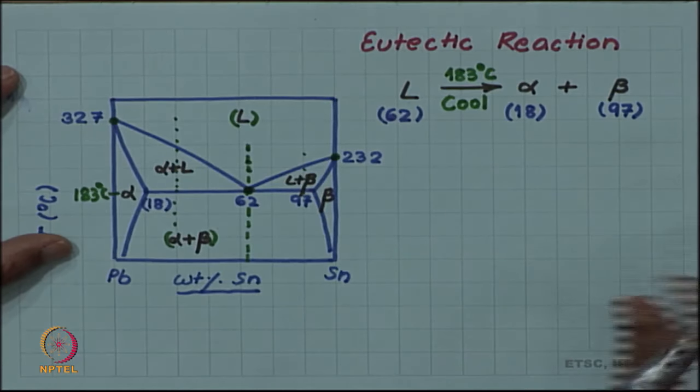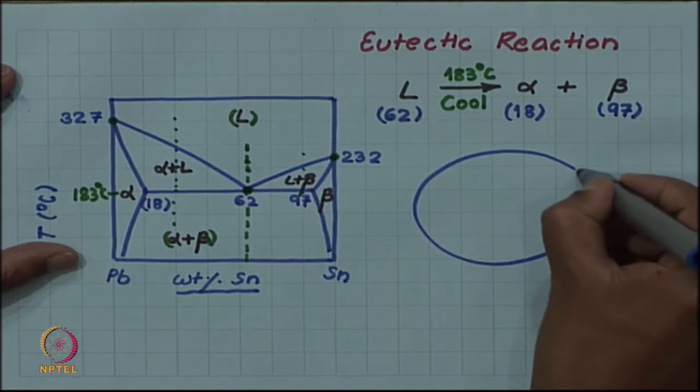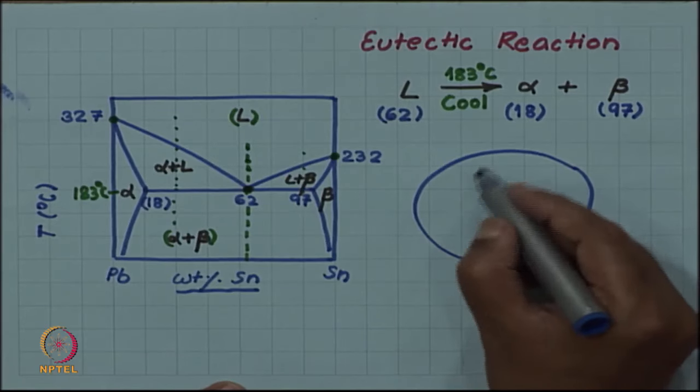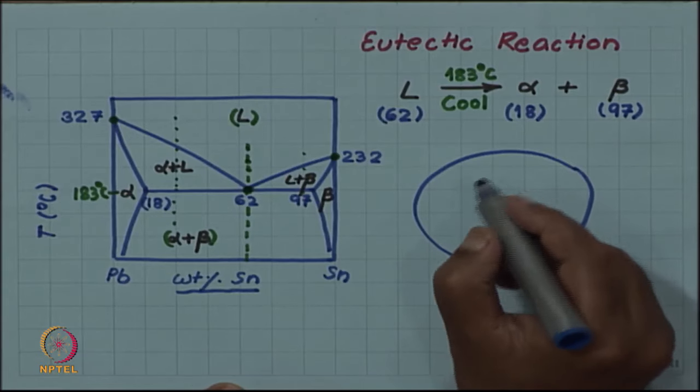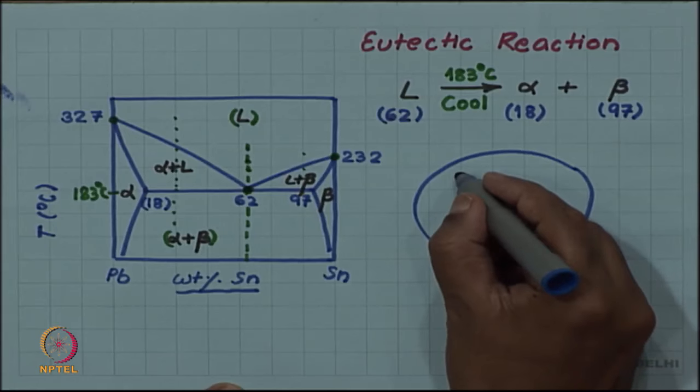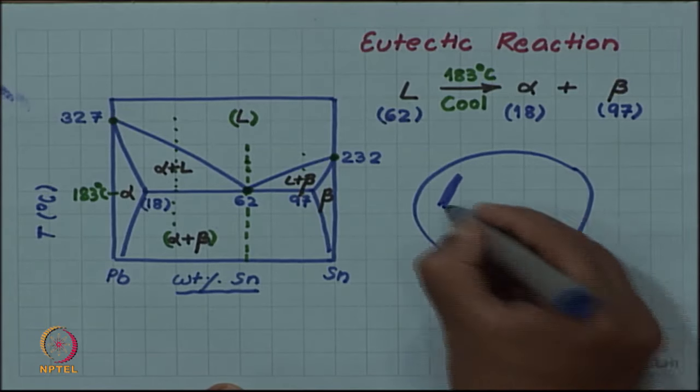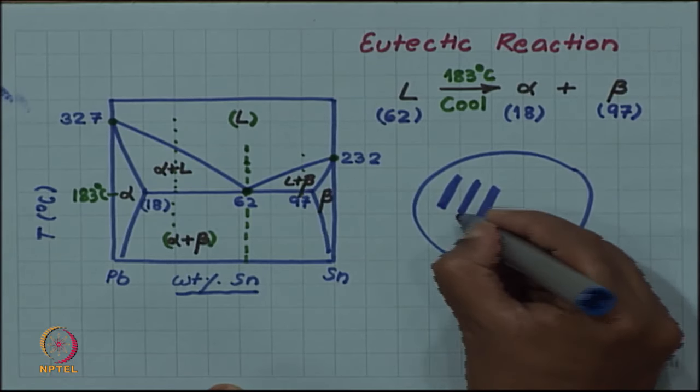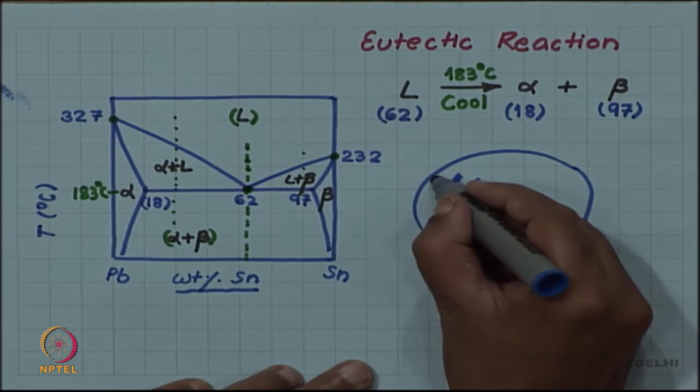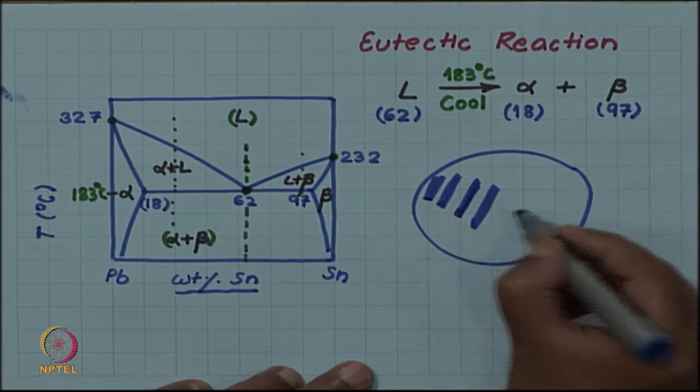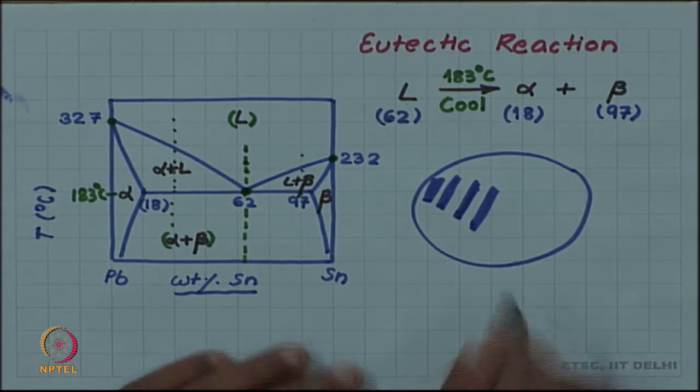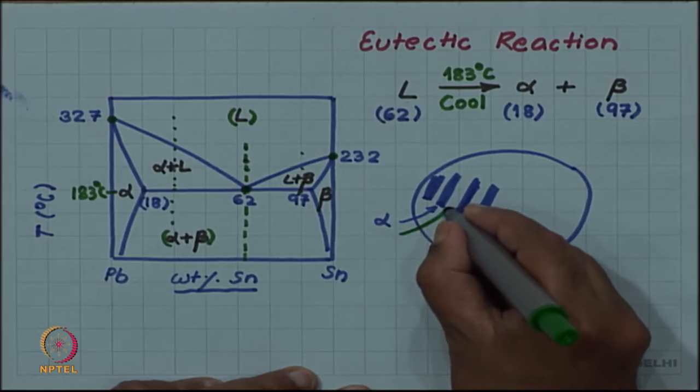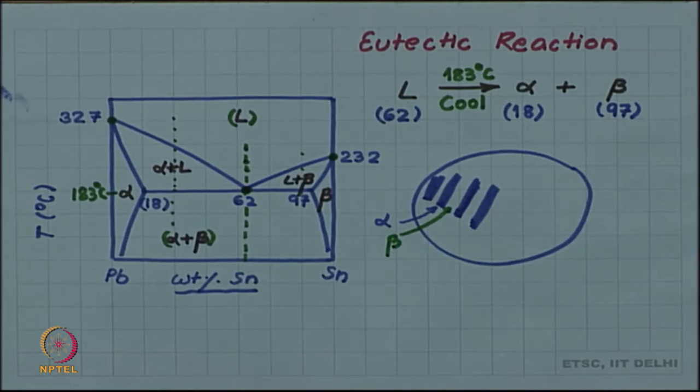If you think in terms of microstructure, you just try to draw the microstructure. Suppose this was all liquid and you hit at 183 degree Celsius temperature, then the solid phase will start forming and this solid phase will be a mixture of alpha and beta. Let me draw alpha as these blue plates. In many eutectic and in case of lead-tin also, the mixture of the two phases come as alternate plates of alpha and beta. In this case I am representing these plates as alpha and in between what I have not colored as beta. So you are forming a eutectic mixture.